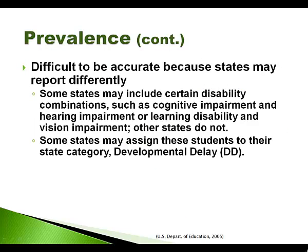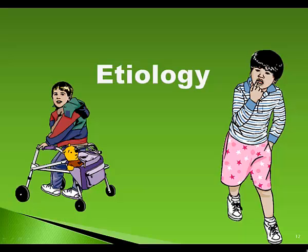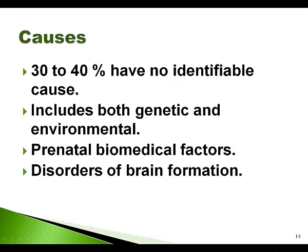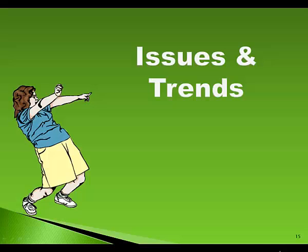It is difficult to be accurate because states may report differently. Some states may include certain disability combinations such as cognitive impairment and hearing impairment, or learning disabilities and vision impairment. Other states do not. Some states may assign these students to the state category of developmental delay. As to identifying causes, 30 to 40% have no identifiable cause. Other causes we do know include both genetic and environmental factors, prenatal and biomedical factors, and disorders of brain formation.